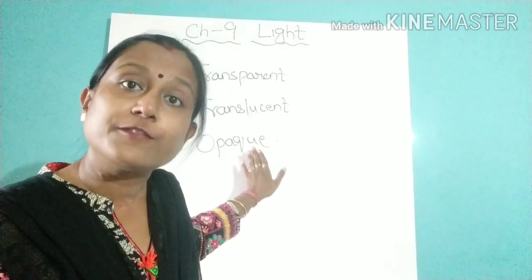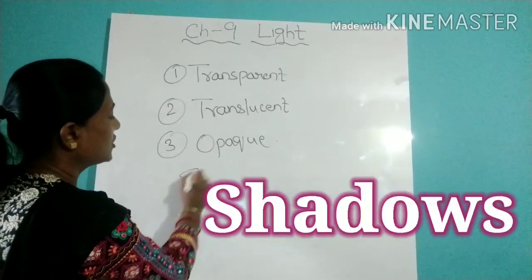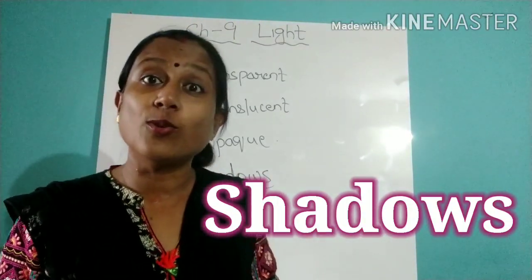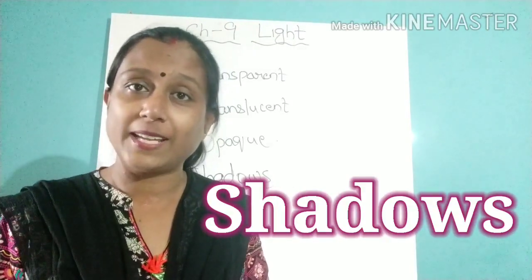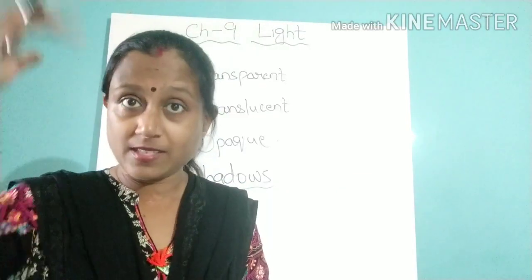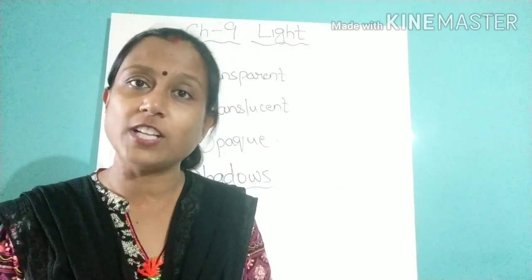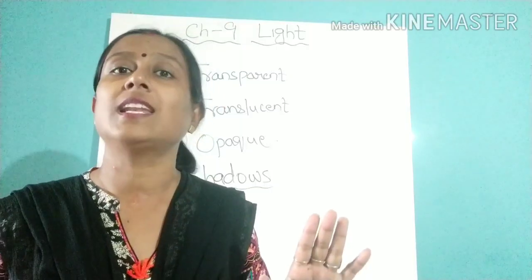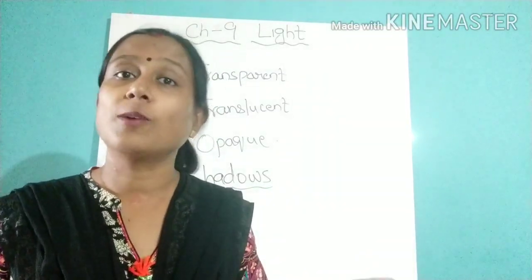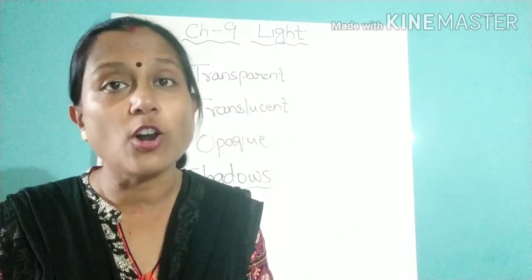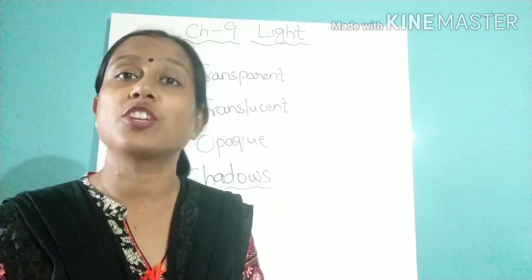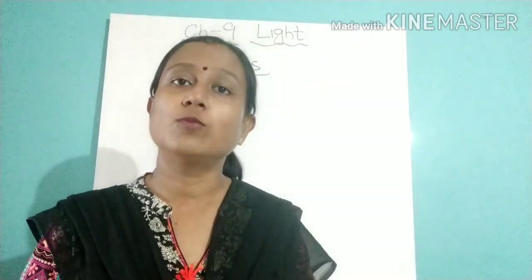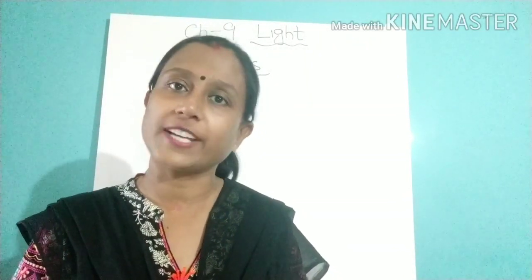Because of opaque objects, shadows are formed. You must have all seen your own shadow — if at noon time you stand under the sun, your shadow falls on the ground. Those substances which do not allow light to pass through them are known as opaque objects, and opaque objects are responsible for the formation of shadows. Now let us see what is a shadow and how shadows are formed.